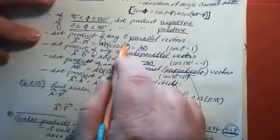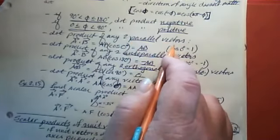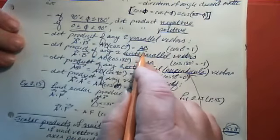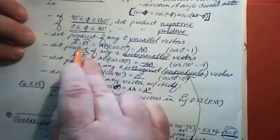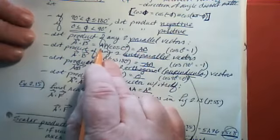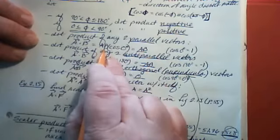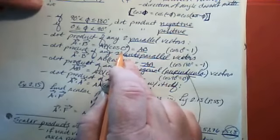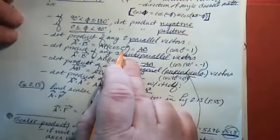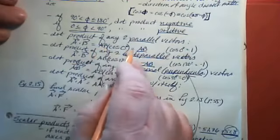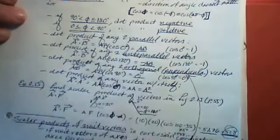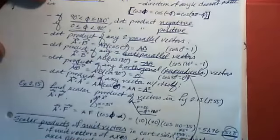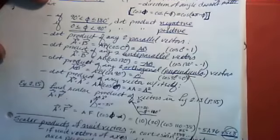There are some rules that come in handy and can save you a lot of time. The dot product of any two parallel vectors — vectors pointing in the same direction — is always just the product of their magnitudes. If vectors A and B are parallel, then A · B = AB cosine(0), and since cosine of 0 is 1, the result is simply AB, the magnitude of one vector times the magnitude of the other.